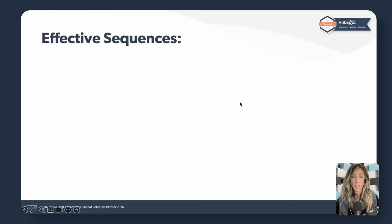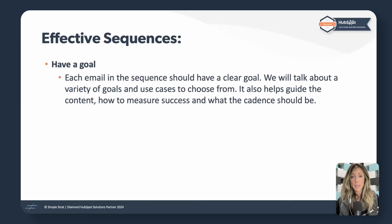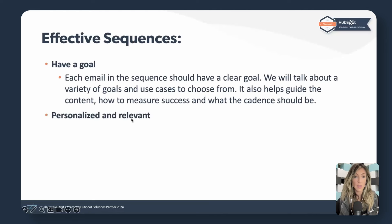Let's talk about best practices for effective sequences. Number one — have a goal. This isn't a surprise. Each email sequence needs a clear goal, which also helps guide your content and cadence. If you're educating an audience and dripping out 10 pieces of content, you're not going to send them out over 10 days — people barely get through their own email every day. That might be once a week for 10 weeks. So your goal has real implications on how you structure your sequence.